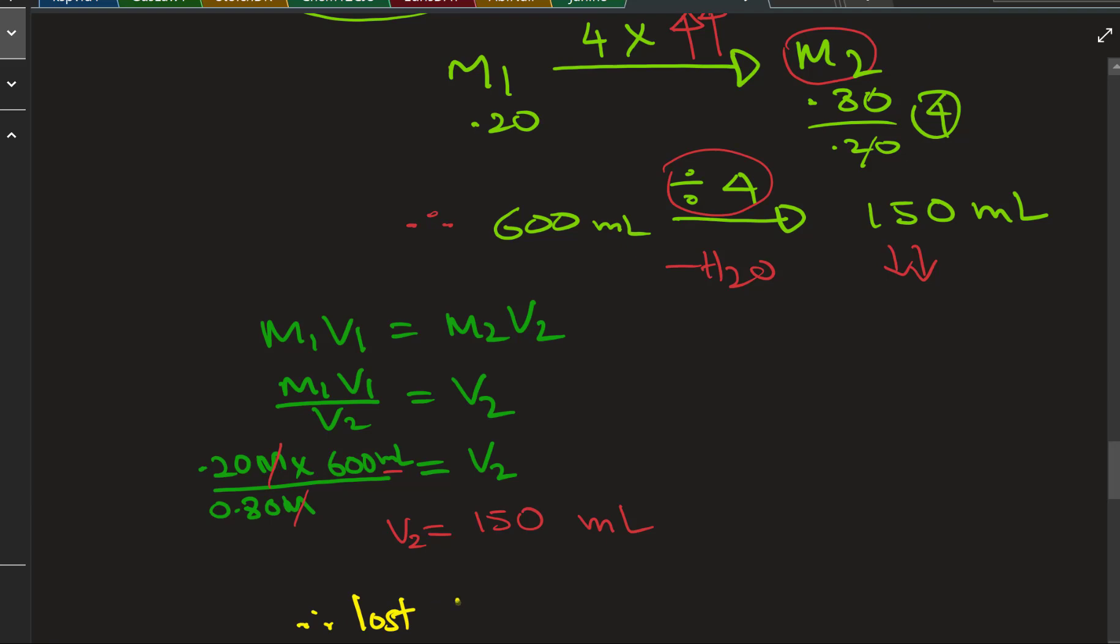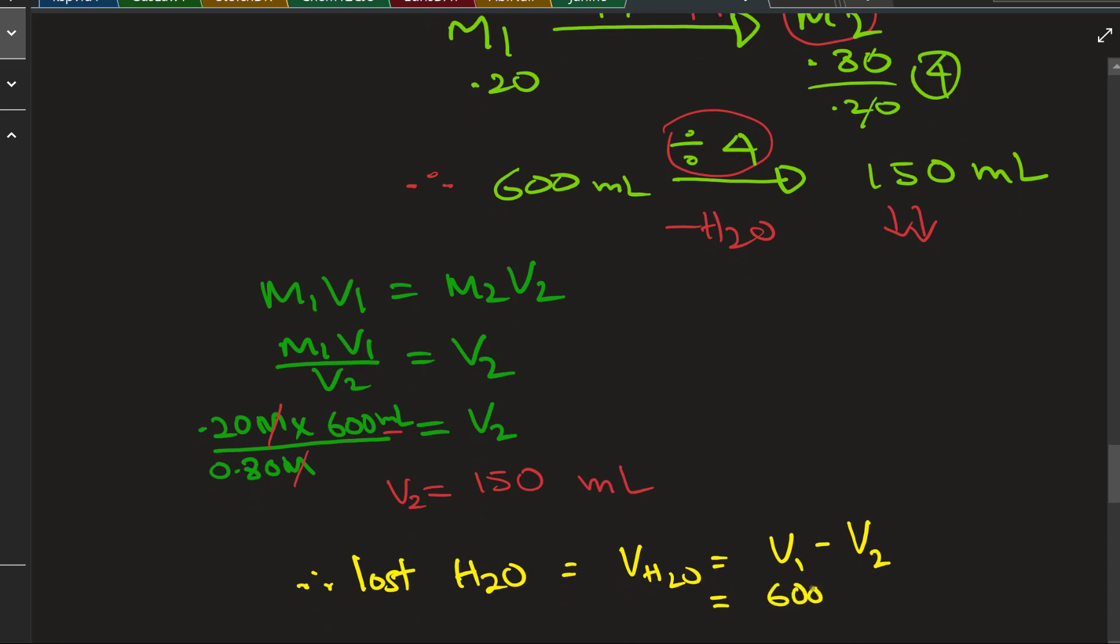The tricky part: you have to understand what is going away, lost water, minus water. That would be V1 minus V2. So V1 is 600, V2 is 150, take the difference.